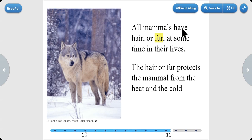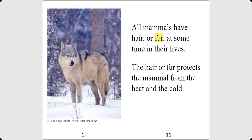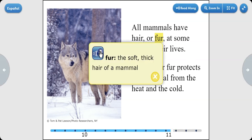All mammals have hair or fur at some time in their lives. The hair or fur protects the mammal from the heat and the cold. Fur is the soft, thick hair of a mammal.